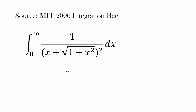Let's try out another interesting question from MIT 2006 integration B. This is the definite integral from 0 to infinity of 1 over the expression x plus square root of 1 plus x squared, with the entire quantity squared. So what is this going to come out to be?